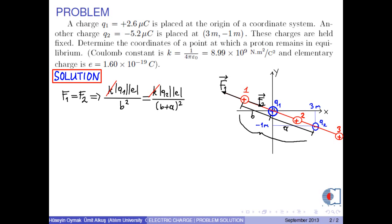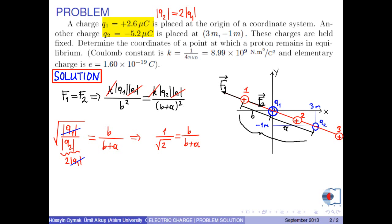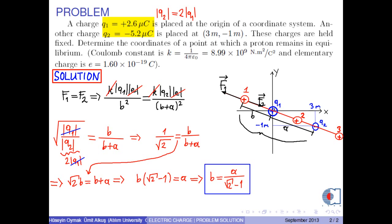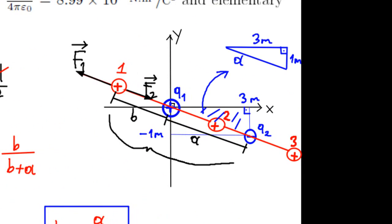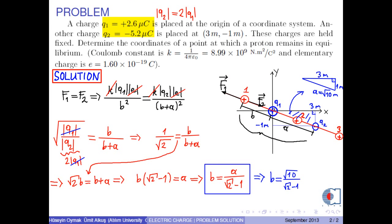K's and E's are cancelled, so we are left with 1/√2 = B/(B + A), from which √2·B = B + A, or B(√2 − 1) = A, giving B = A/(√2 − 1). From the right triangle in the figure, A is found by the Pythagorean theorem as √10 meters. So B = √10/(√2 − 1), and the calculation gives 7.6344 meters.